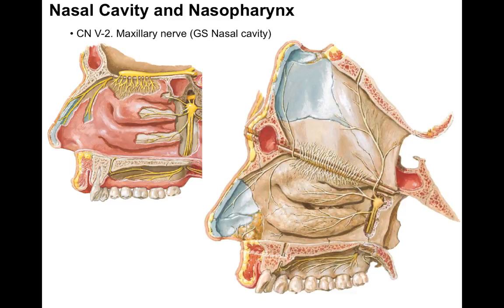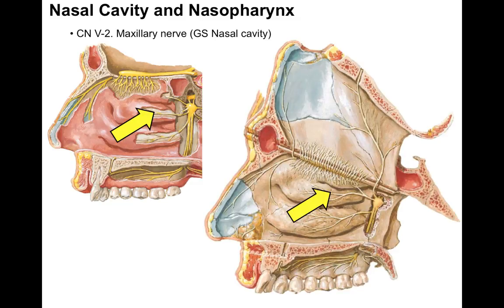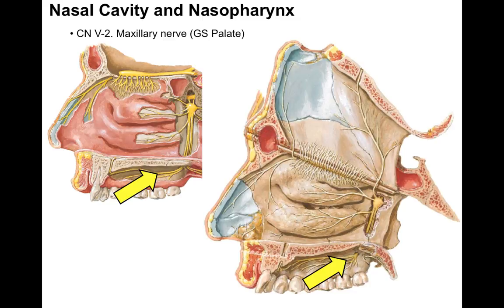Cranial nerve V-2 is the maxillary nerve. It provides general sensation to the nasal cavity — pain, temperature, touch, vibration, and so forth. Cranial nerve V-2 sends off branches that go to the nasal septum, branches that go to the lateral nasal wall, and even branches that go down to the hard palate for general sensation, which also covers the hard palate and the lingual surface of the gums.